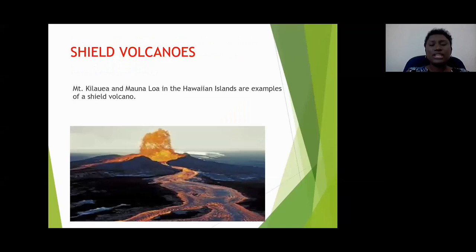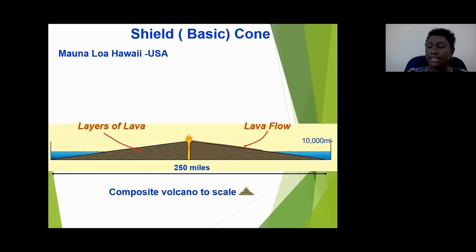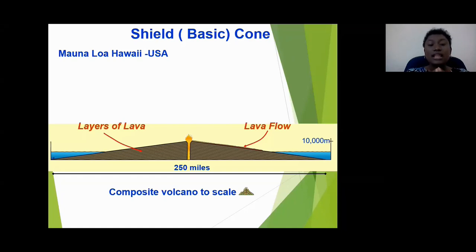Shield volcanoes. The photograph you are viewing shows an example of a shield volcano — this is Mauna Loa, found in the Hawaiian Islands. In fact, most of the volcanoes in the Hawaiian Islands are shield volcanoes. Notice in the diagram the base or diameter of the volcano — it is characterized by having a very wide base, and it is not as tall as the composite or stratovolcano. It is built up of layers of lava flow.